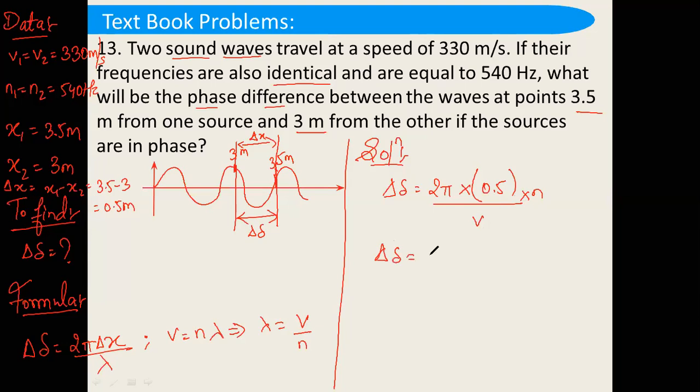So, what will be delta? Delta will be equal to 2 pi into 0.5 into n. What is n? 540 divided by velocity. Velocity is what? 330. You have to solve this.